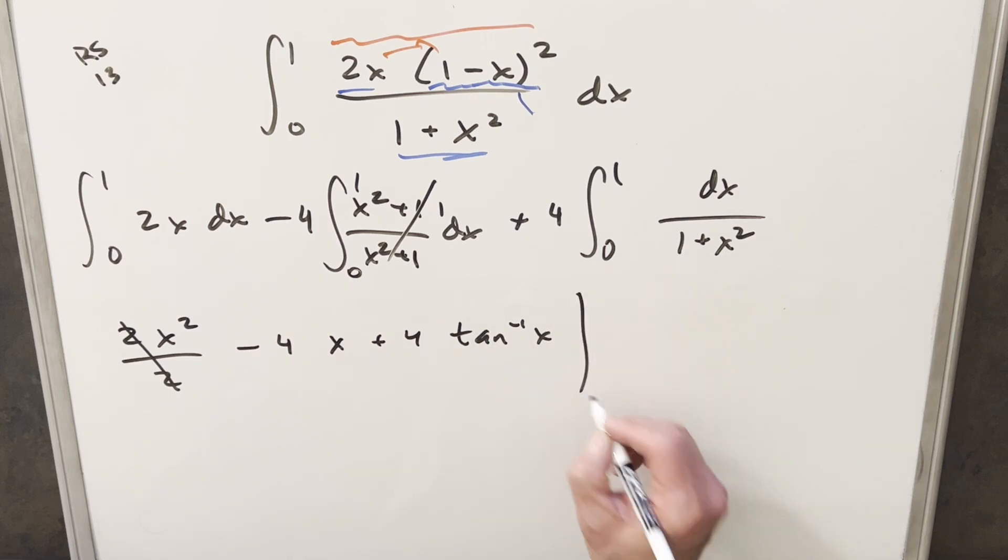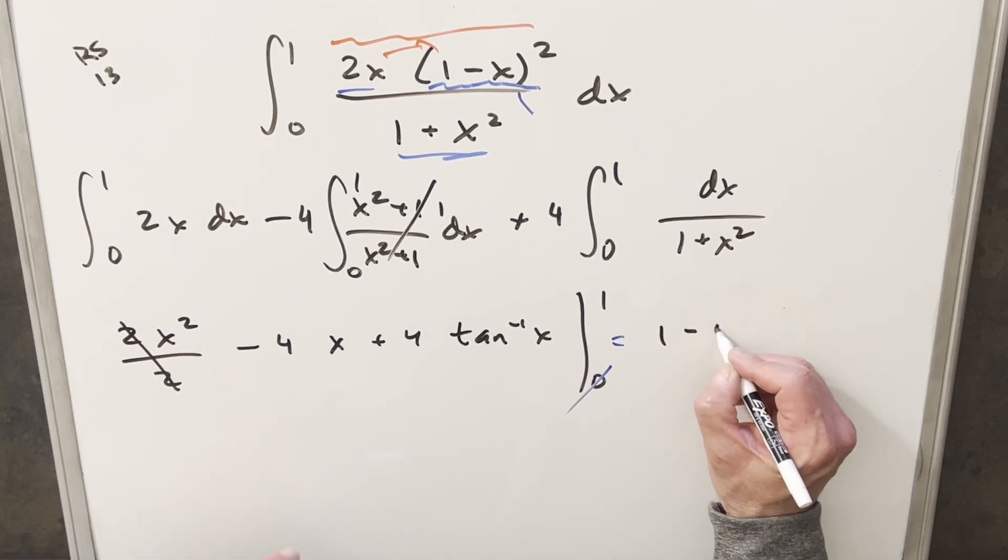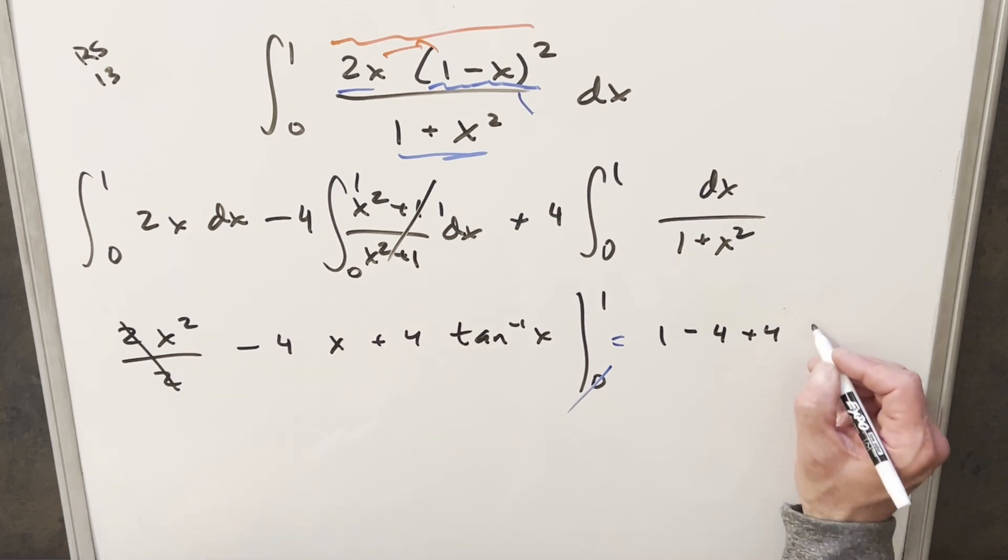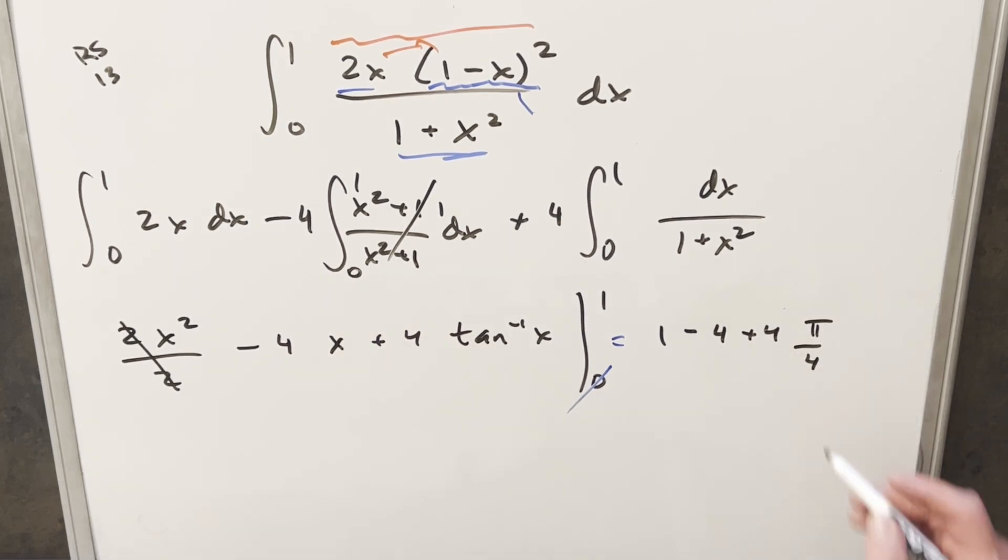And then for all this, we're just evaluating from 0 to 1. Just notice that when we evaluate at 0, these terms are going to be 0. Arctan at 0 is 0. So I'm not going to worry about that. And then let's just compute everything at 1. So first, 1² is going to give me 1 here. This is going to become minus 4 plus 4 arctan of 1. That's just going to be π over 4. Cancel the 4s here. And so for my final solution of this, we just get π minus 3.